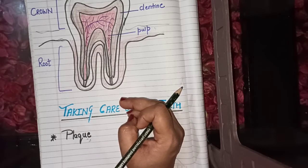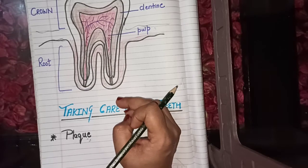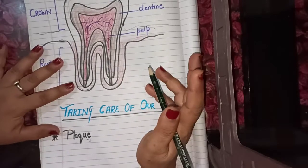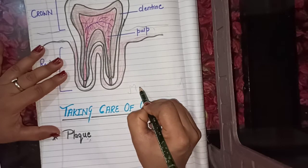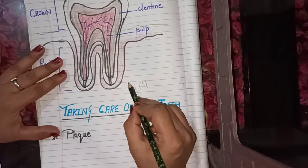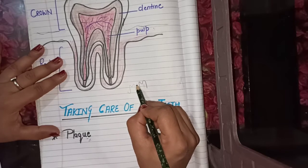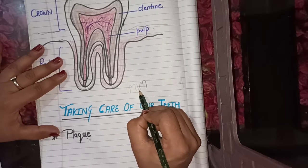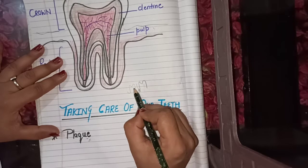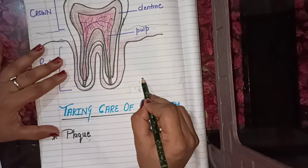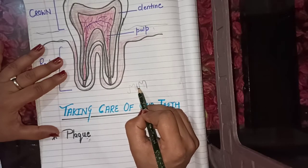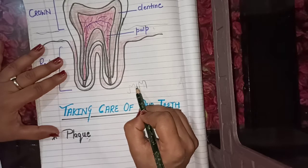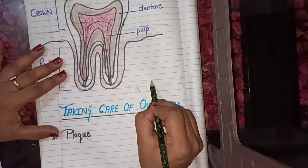But how is plaque formed? After we eat food, some of the food gets caught in the middle of our teeth. At the same time, the bacteria present in our mouth attacks that food and makes a yellowish substance — that substance is called plaque.